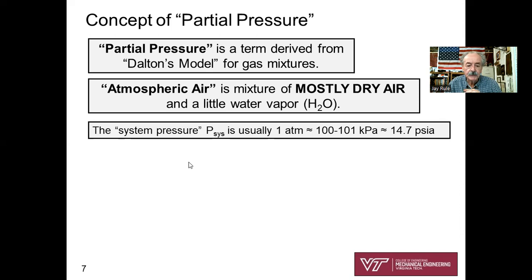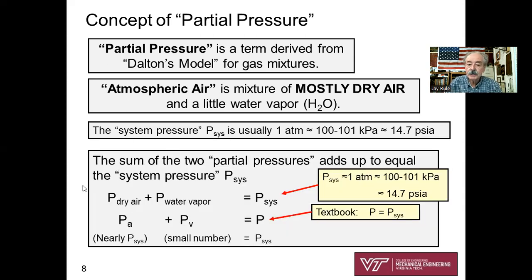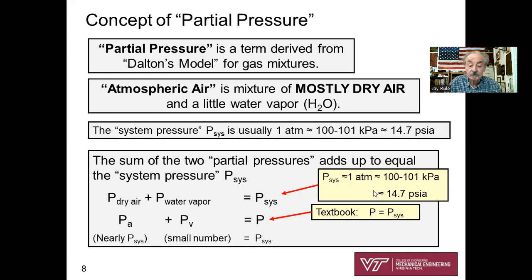System pressure — I call it P-subsys, the book calls it just P — is usually about one atmosphere, 100 to 101 kPa. That's the pressure you measure with a barometer or a mercury manometer: the absolute pressure of the whole mixture. The partial pressure of dry air plus the partial pressure of water vapor adds up to equal the system pressure, about 100 kPa.